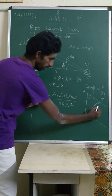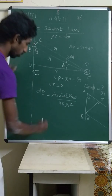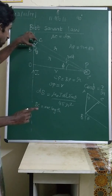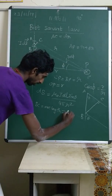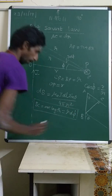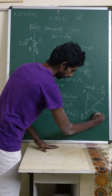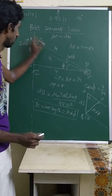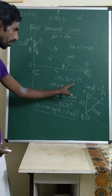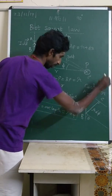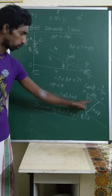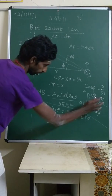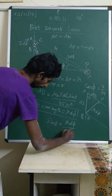The distance BC is the arc length: arc length equals radius times angle, so BC = r·dφ. AB is the current element dl. AC equals dr. From this triangle, sin θ equals the opposite over hypotenuse, which is r·dφ / dl. Therefore, dl·sin θ = r·dφ.